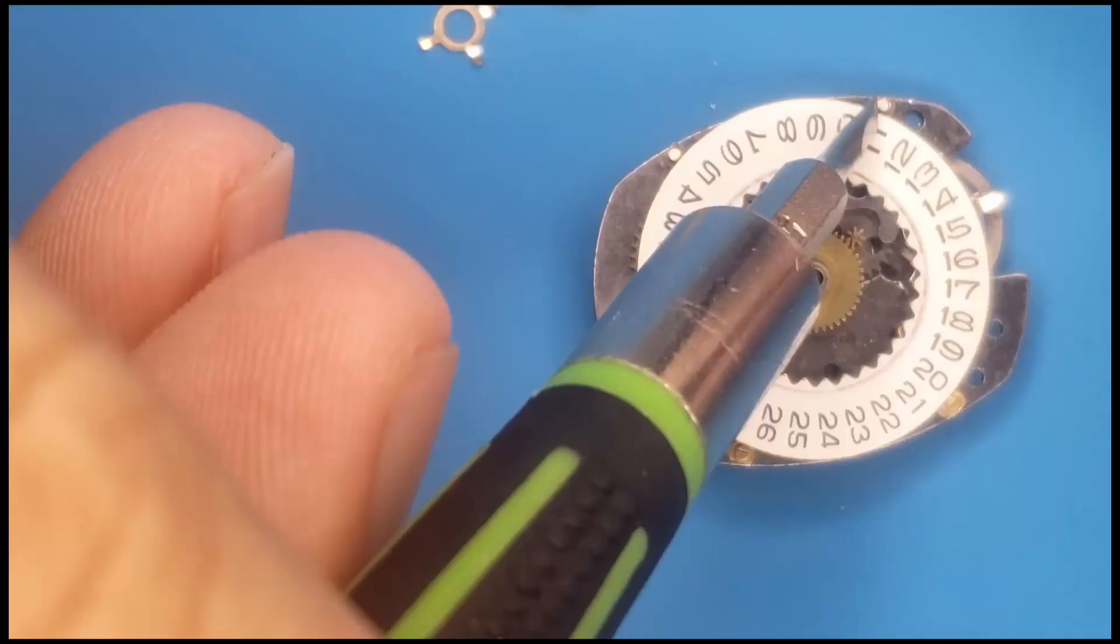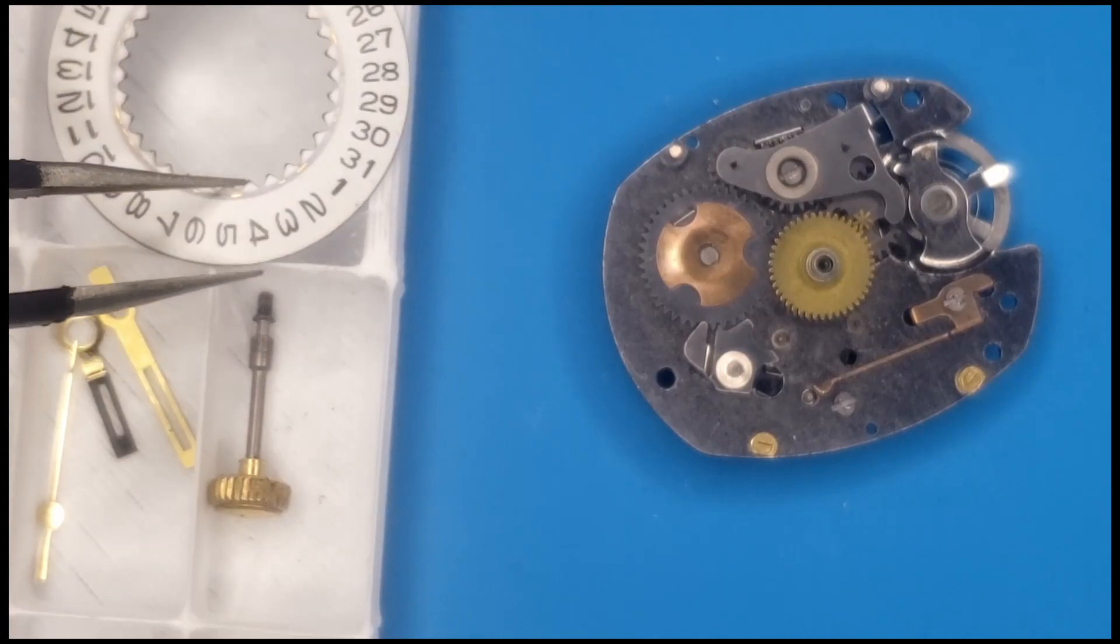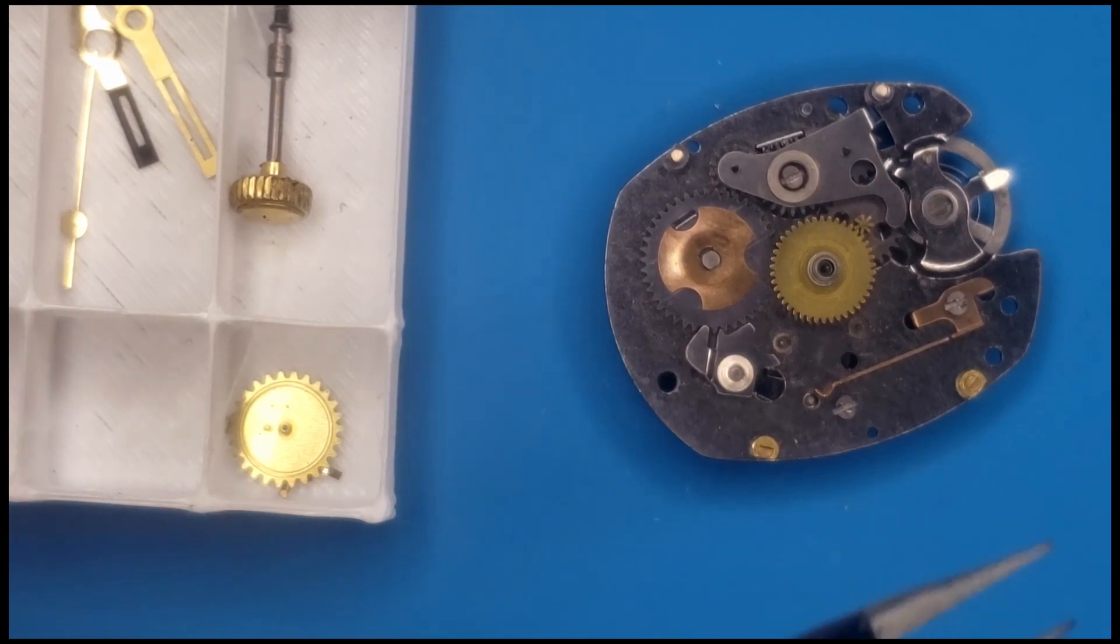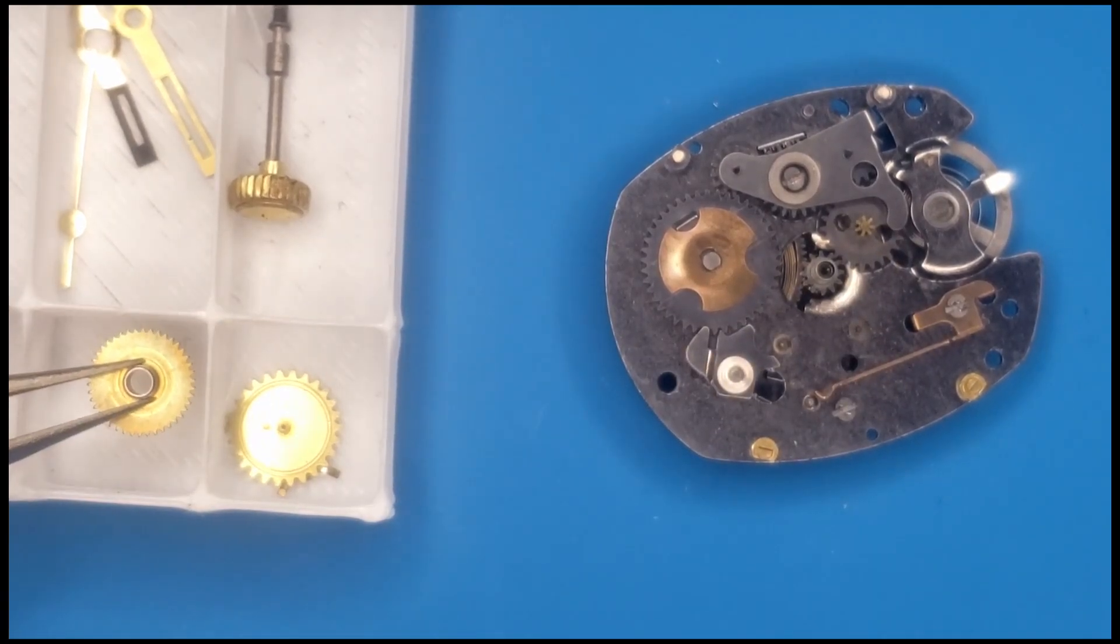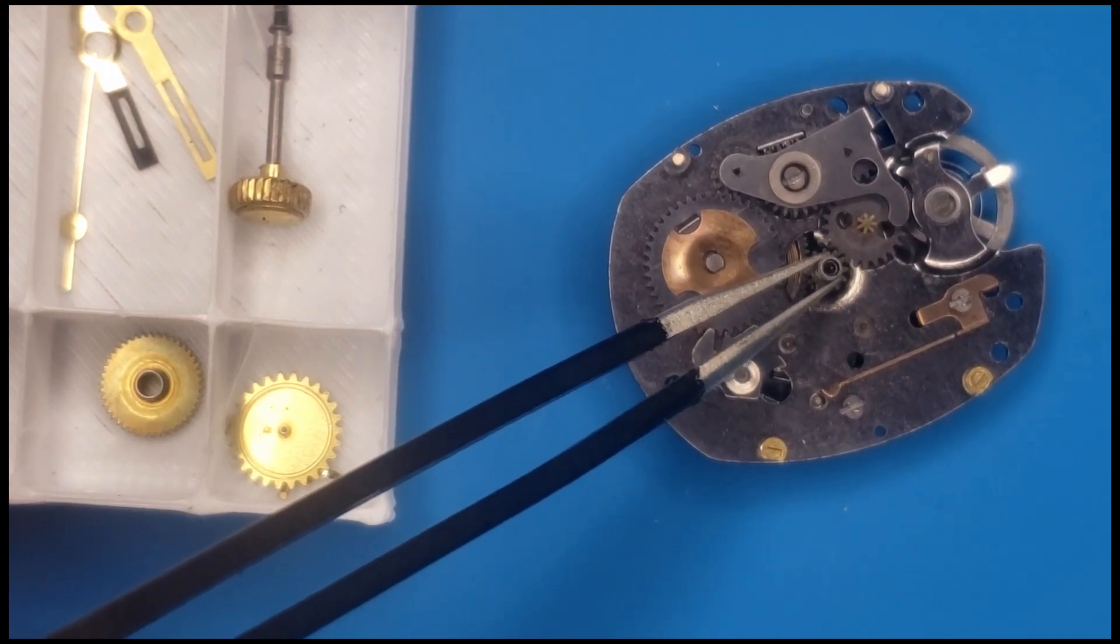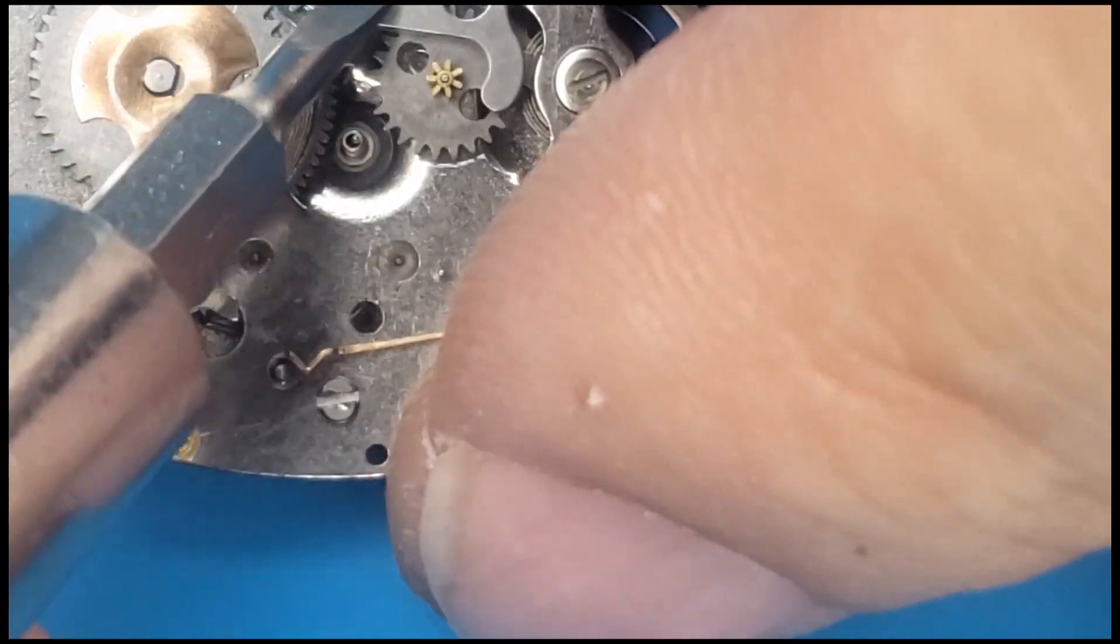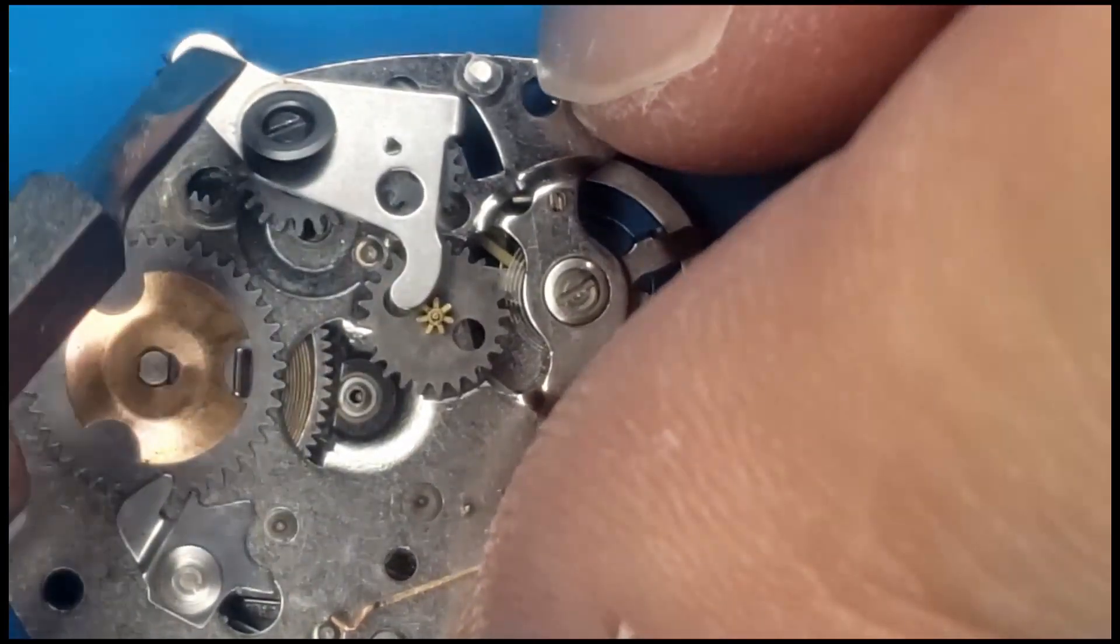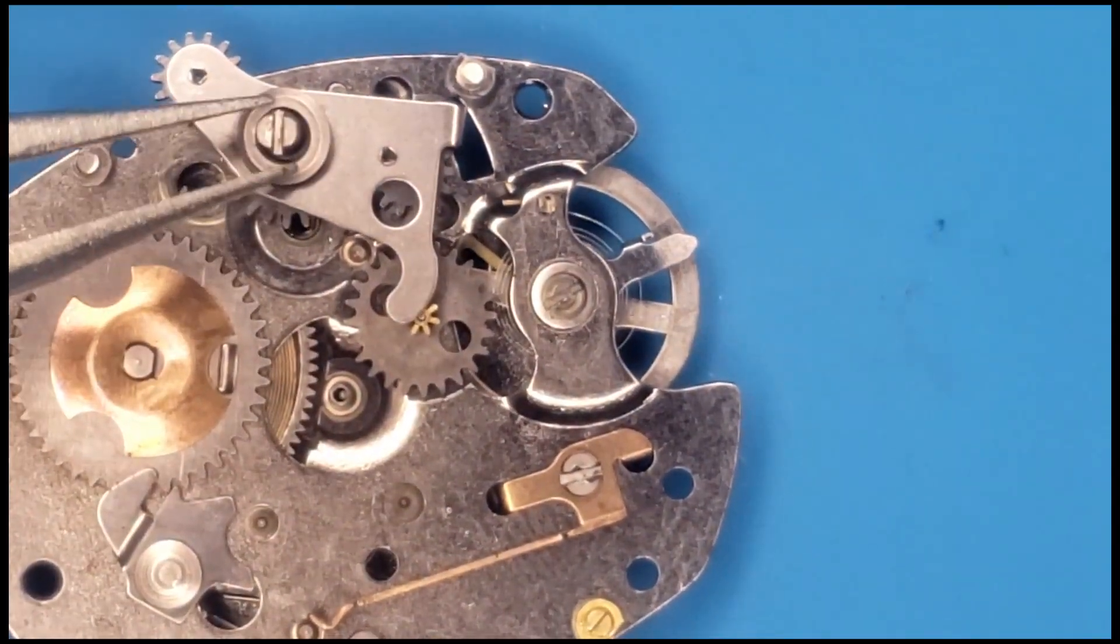There you go. Then we'll just... I'm actually really worried there's something under this, but nope, it's fine. Just kind of gently slide that away. All right. So grab my parts tray. And we'll grab that power wheel. And then the cannon pinion. And then yeah, as I was moving this around, this whole area was loose for the winding gears.